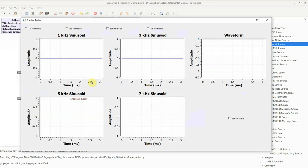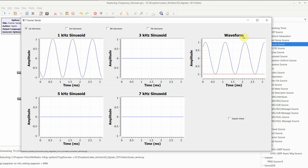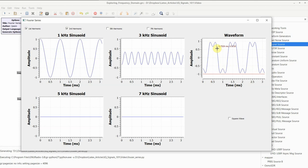When 1 kilohertz is turned on we can see this here, 3 kilohertz is turned on. We have a summation of 1 kilohertz sinusoid with amplitude 1 and 3 kilohertz sinusoid with amplitude 1/3.